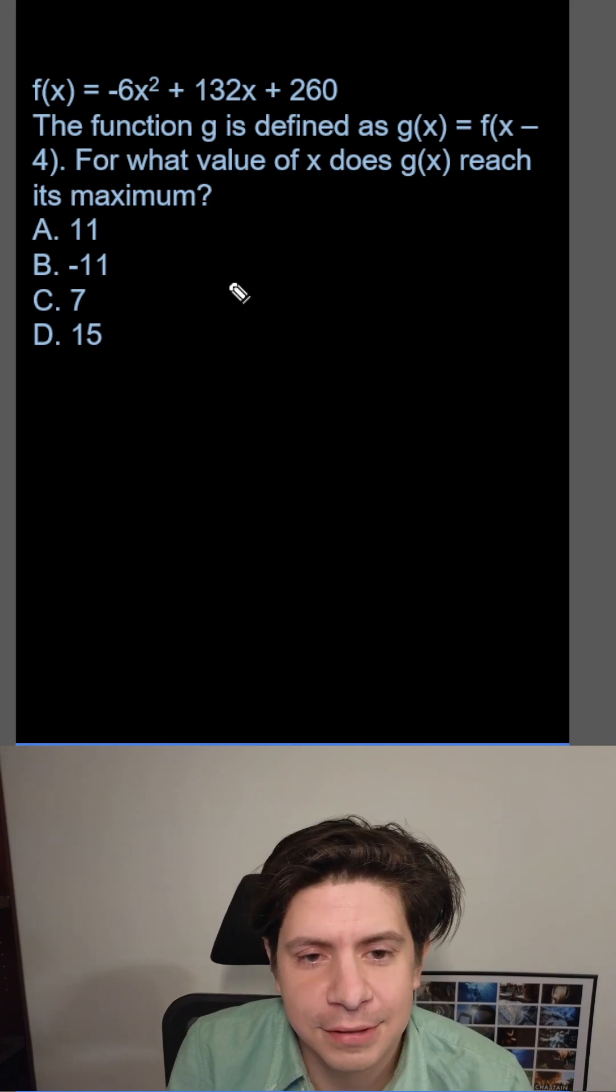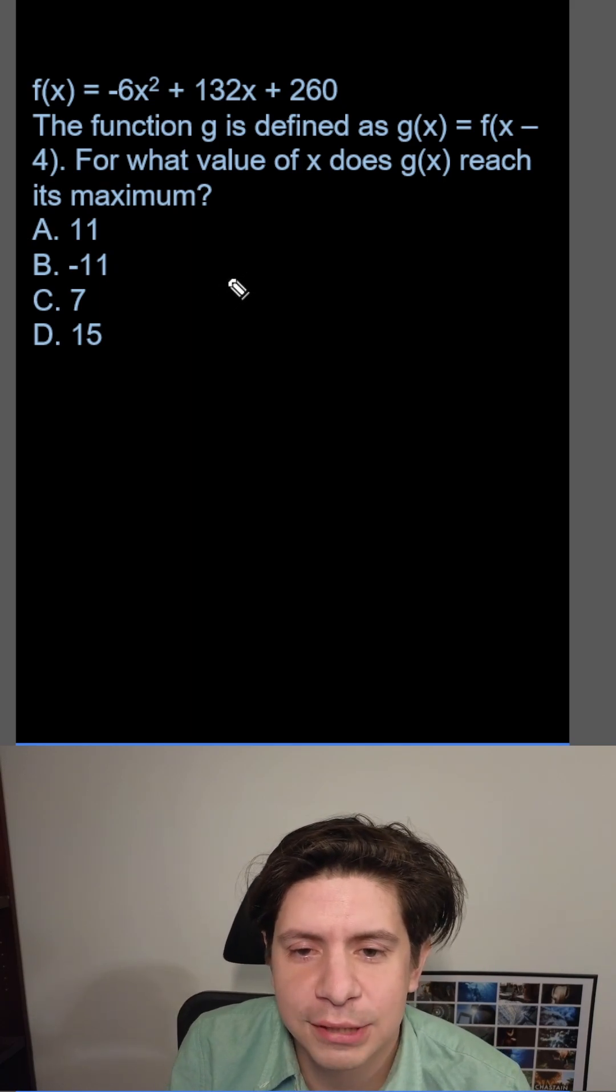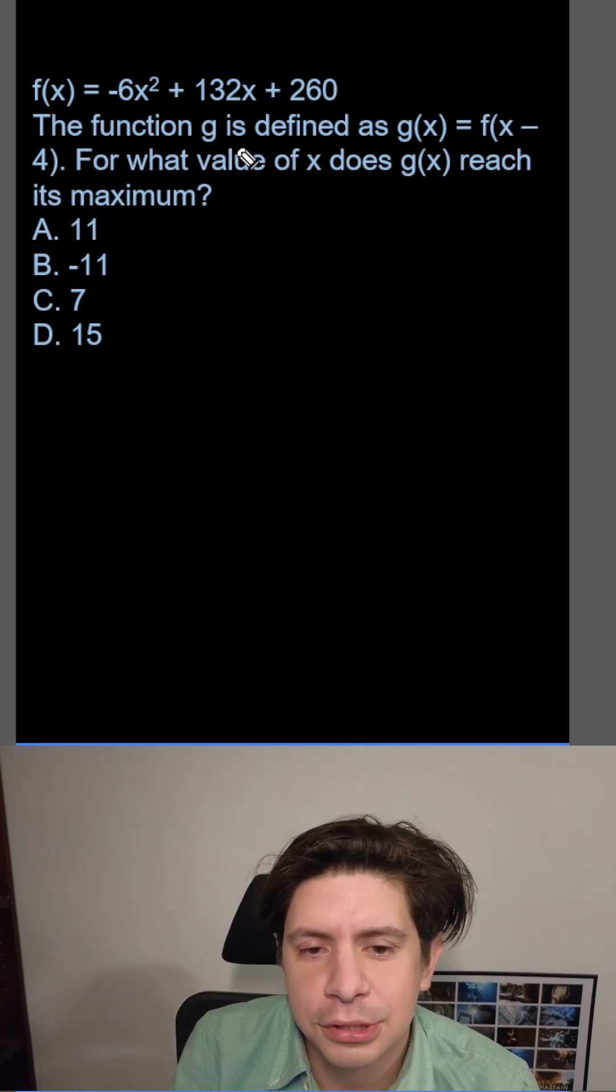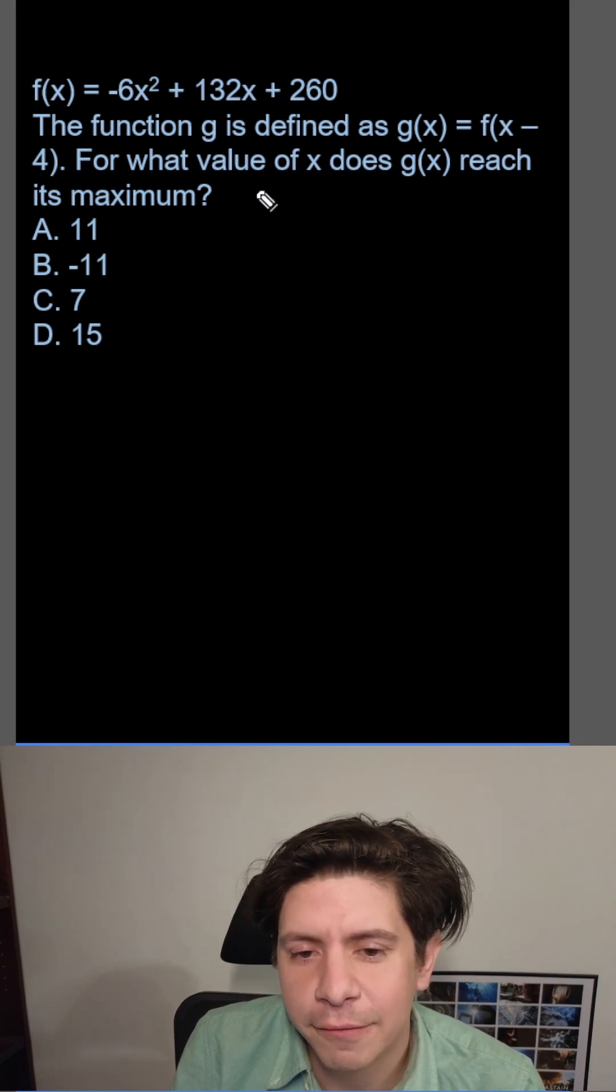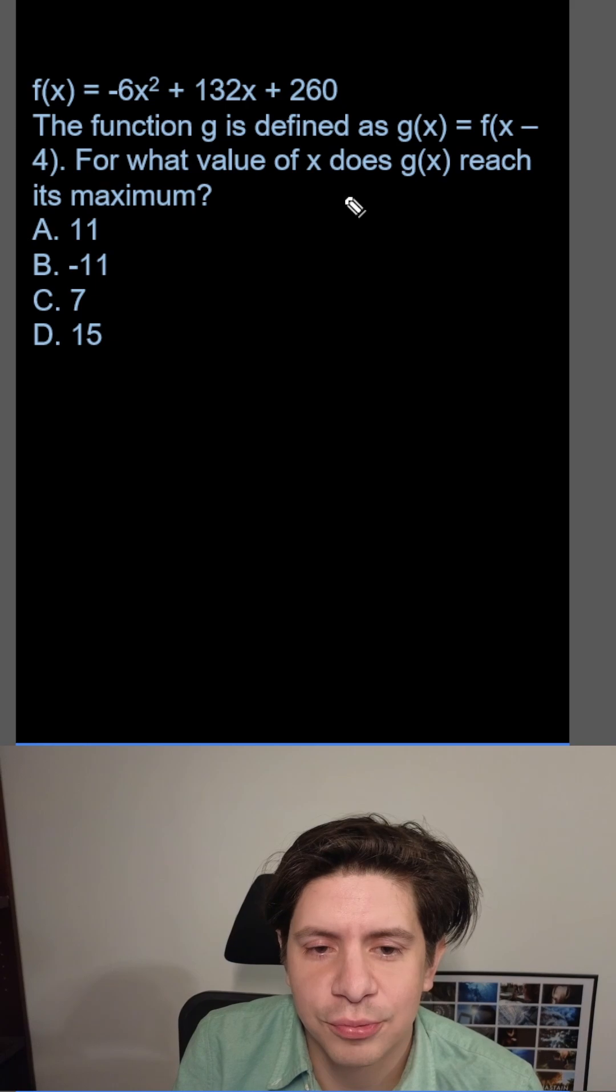f(x) equals negative 6x squared plus 132x plus 260. The function g is defined as g(x) equals f(x minus 4). For what value of x does g(x) reach its maximum?